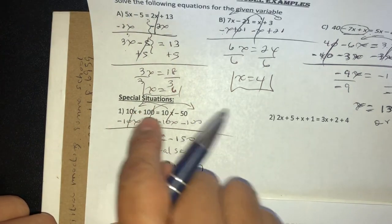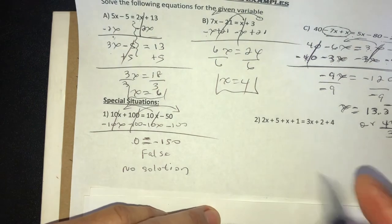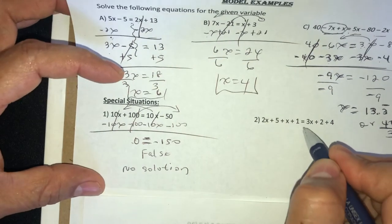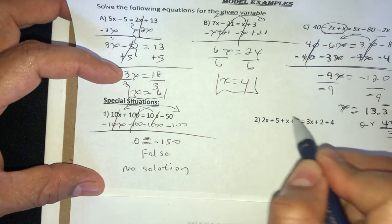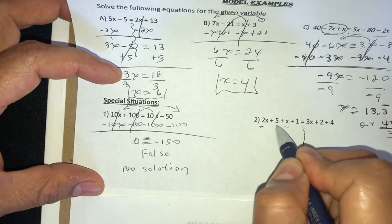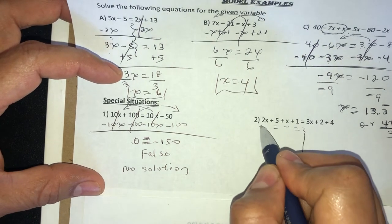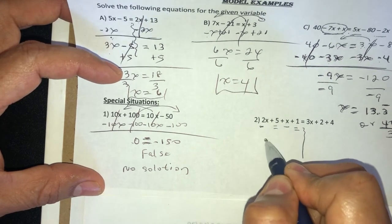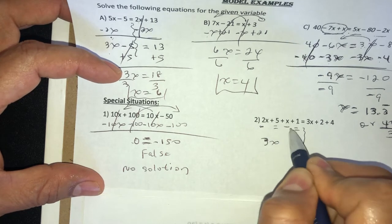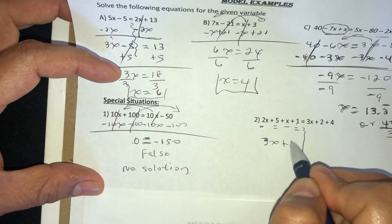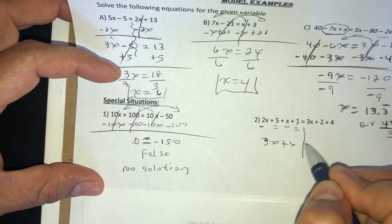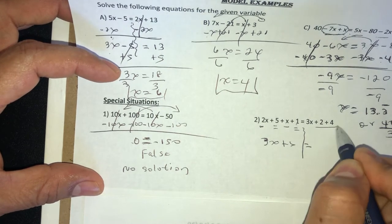Let's see what happened here now. Let's combine like terms first. I have family here, this with that and that with that. So 2x plus 1x, that will give you 3x, and 5 plus 1, that will give you 6 equals. Family here, I have these two, and that's 3x plus 6.